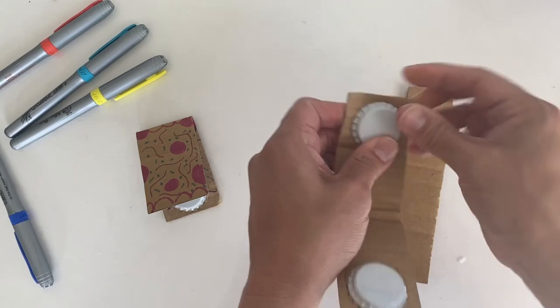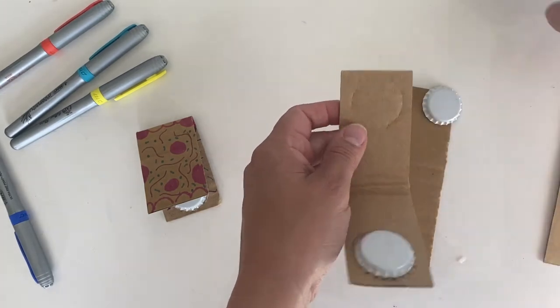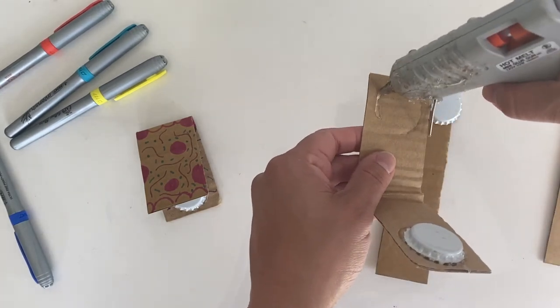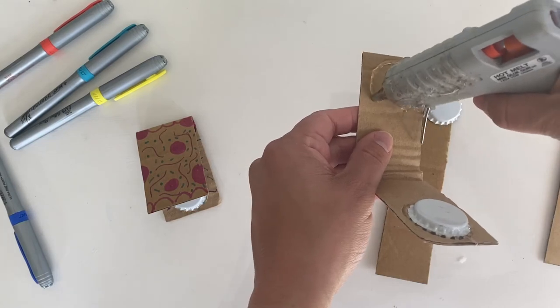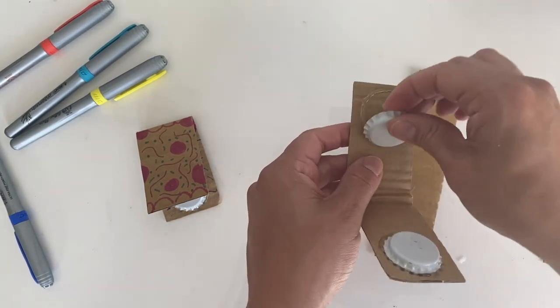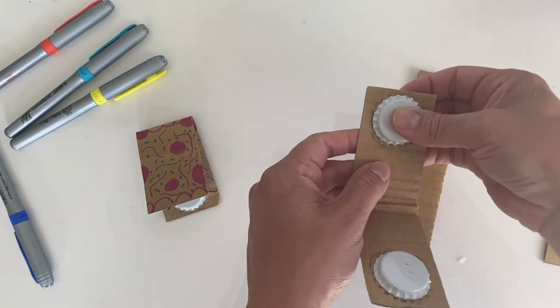Press down, make your indentation, and then follow those marks to put your hot glue exactly where your bottle cap is going to be. There you go.